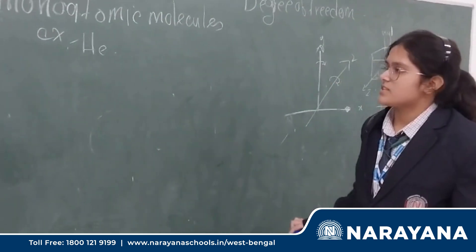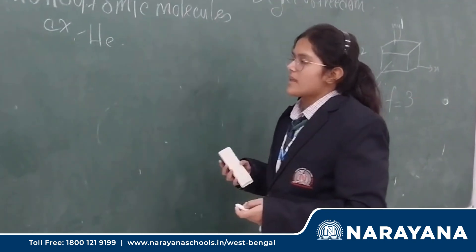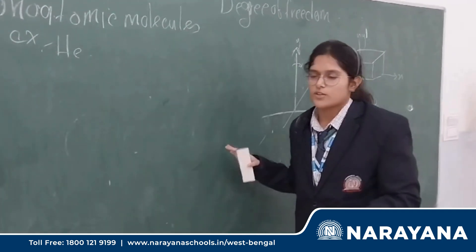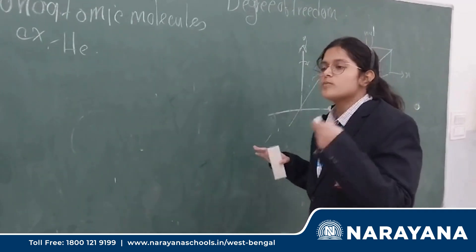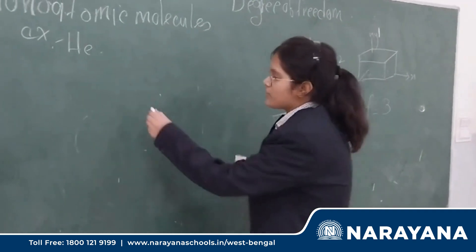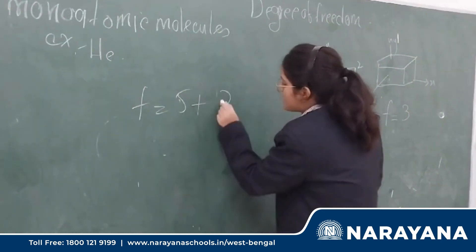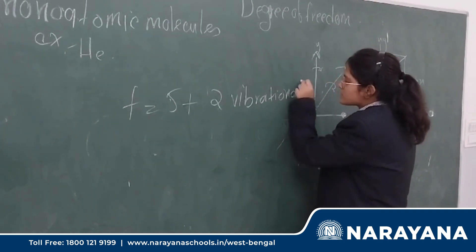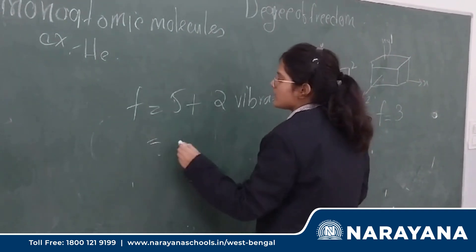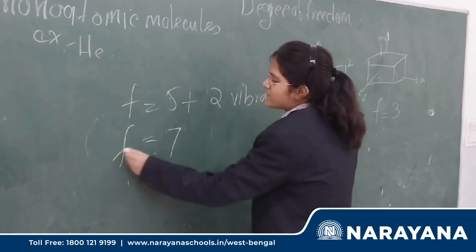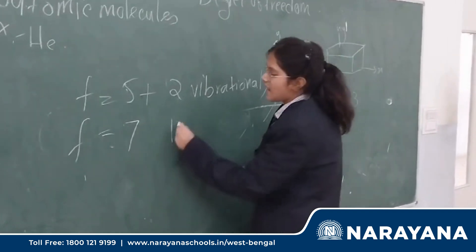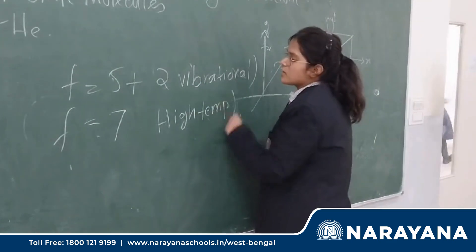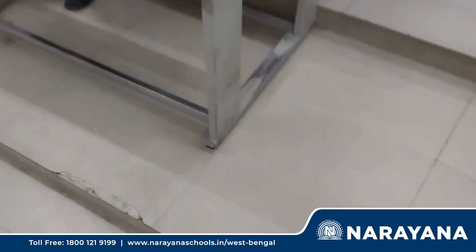If the temperature is increased to a high temperature, then there is a vibrational energy yielded between the molecules, for which two more extra degrees of freedom are also added. So at high temperature: 5 plus 2 vibrational gives F equals 7. At normal low temperature it is just 5.